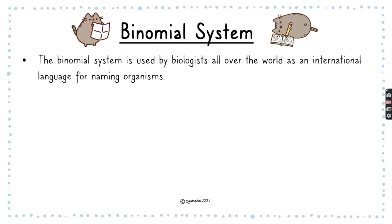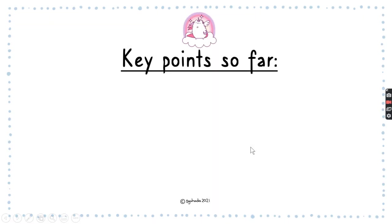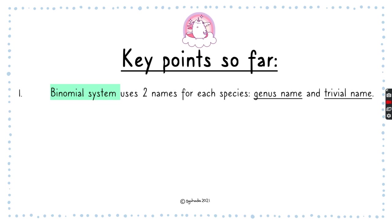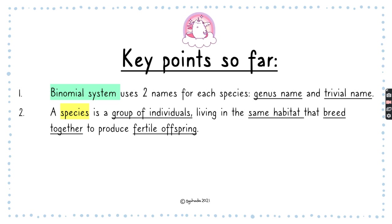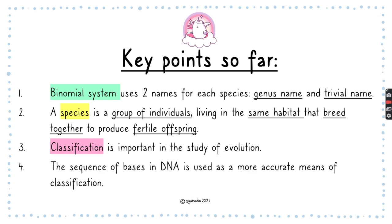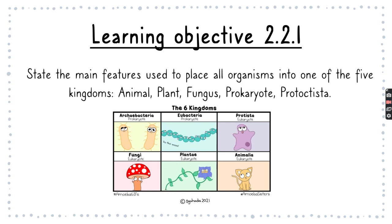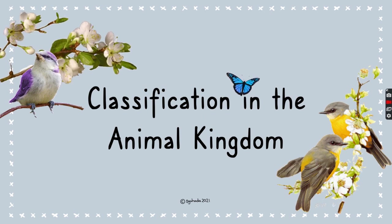The key points so far: the binomial system uses two names for each species — the genus name and the trivial (species) name. A species is a group of organisms that breed together to produce a fertile offspring. Classification is very important for studying evolution, and the sequence of bases in DNA can be used as a more accurate means of classifying organisms. Now we're going to move on to learning objective 2.2.1: state the main features used to place organisms into one of the five kingdoms — animal, plant, fungus, prokaryotes, and protoctista.